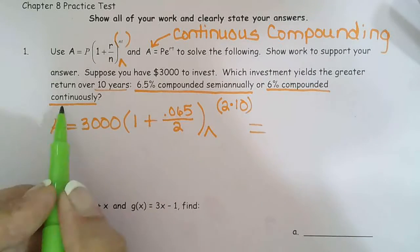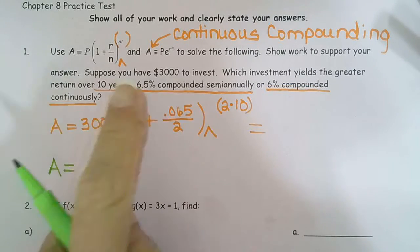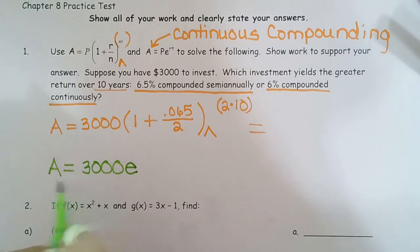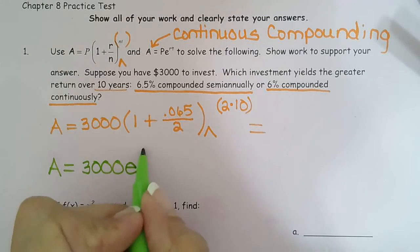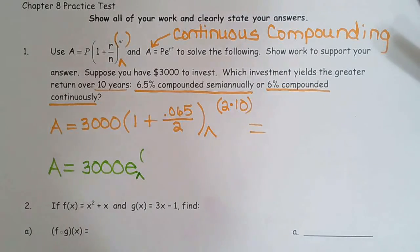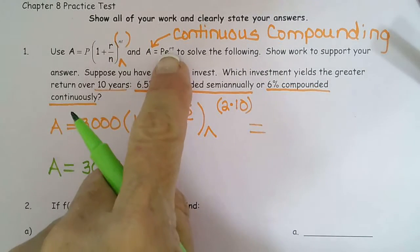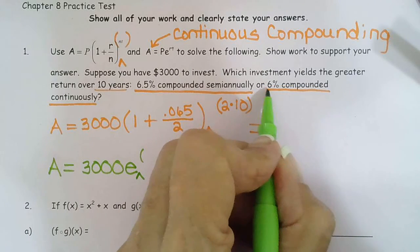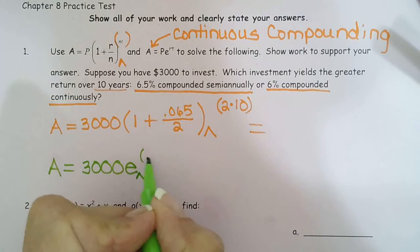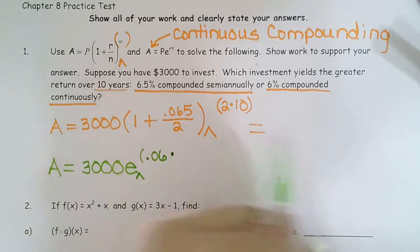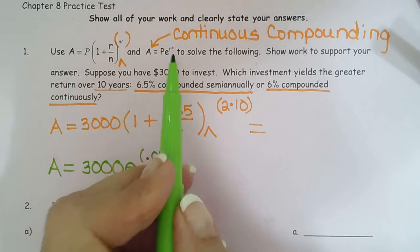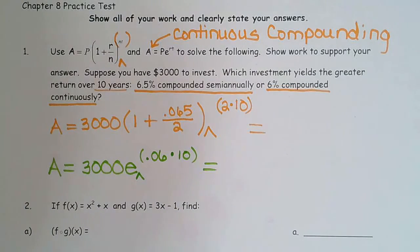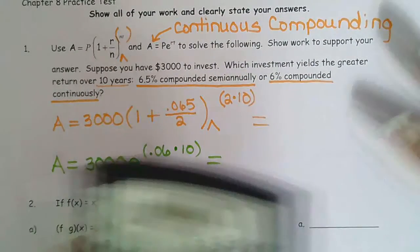For compounded continuously, we have P — the principal, $3,000 — times E. Remember, the calculator gives you E on this one, so you don't have to type it in manually, but I usually do just to be consistent. Then R is the rate; we said this rate is 6%, and moving the decimal two places gives us 0.06, times T — time — which is 10 years. Now we have both ready for the calculator, so we only have to pick it up once.